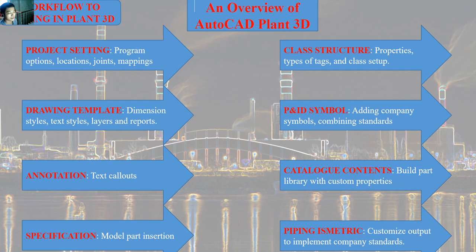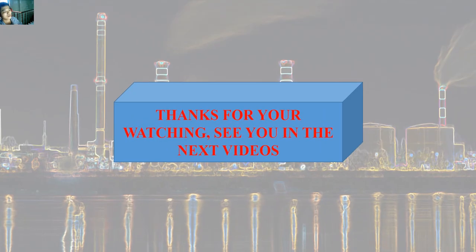Finally, in the piping isometric section we will customize the output to implement the company standard. That covers the overview of AutoCAD Plant 3D. I hope that after this video you will know what AutoCAD Plant 3D can do and how to work with it step by step. Thanks for watching and see you in the next video.